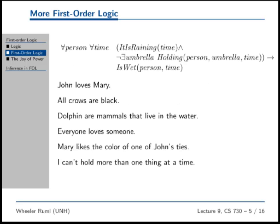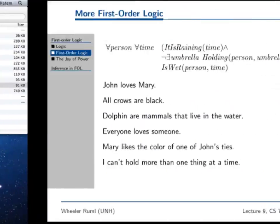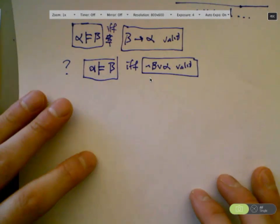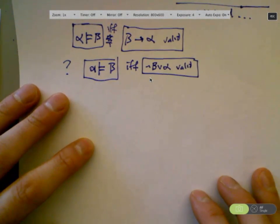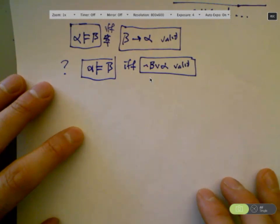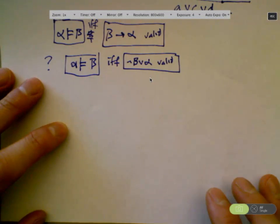Okay, so we wrote down a bunch of these. All crows are black, remember we did that. Dolphins are mammals, we did that one. I don't think we did this one last time. Who wants to do this one? Dylan, everybody loves someone. It's not on the slides. You might have to get out your pen, I apologize.